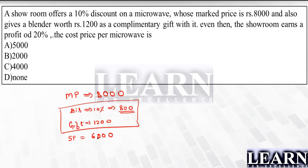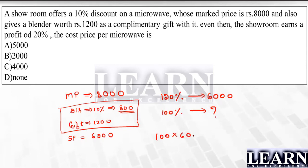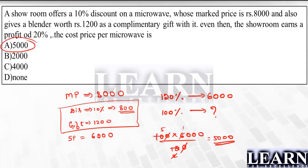This selling price of ₹6000 itself represents a 20% profit. So 6000 corresponds to 120%. We need to find what 100% (the cost price) is. Cost price = (100 × 6000) / 120. The zeros cancel, and simplifying: 1 × 5 × 1000 = ₹5000. The cost price of the microwave is ₹5000.